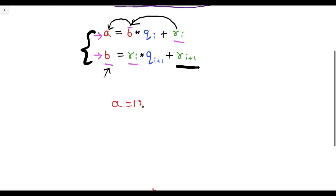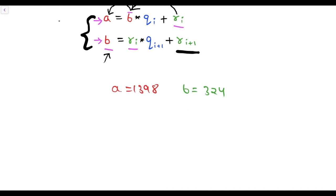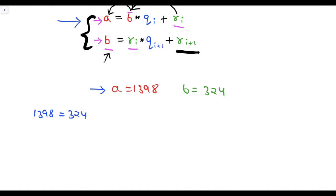Let's take a equal to 1398 and b equal to 324, and now let's follow the standard GCD algorithm. Using this equation, we can write a as 1398 and b as 324. We have to find the value of q_i and r_i. Here the value of q_i is 4 and the value of r_i is 102.